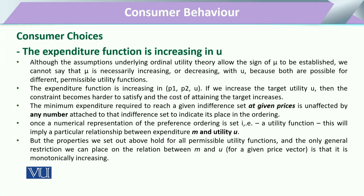The assumptions underlying the ordinal utility function theory allow that the sign of mu — which shows the marginal cost of money — cannot be said to be necessarily increasing or decreasing, because both are possible for different permissible utility functions. The consumer might want to decrease or increase utility depending on certain conditions.